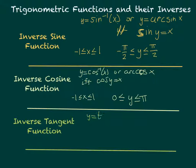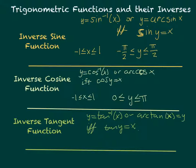The inverse tangent function is written y equals inverse tangent of x, or arc tangent of x, and that's true if and only if tangent of y equals x. The range of the original tangent was all real numbers, so the domain is negative infinity < x < positive infinity. The range is negative pi over 2 < y < pi over 2.